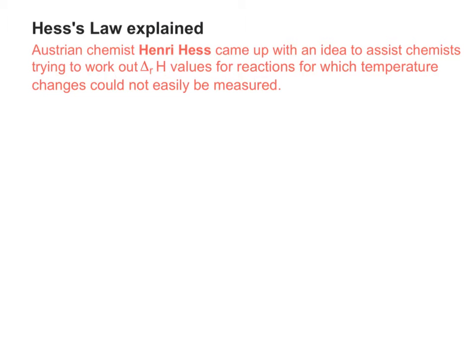And his idea was that because some reactions are difficult to measure the temperature change for, then it's going to be quite difficult to work out the delta RH value. In other words, it's going to be hard to do Q equals MC delta T.